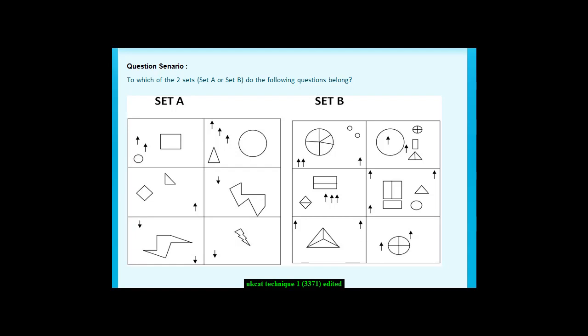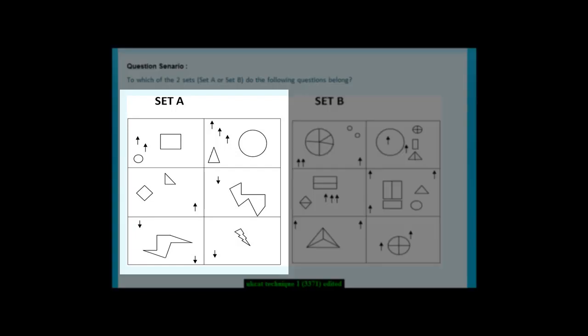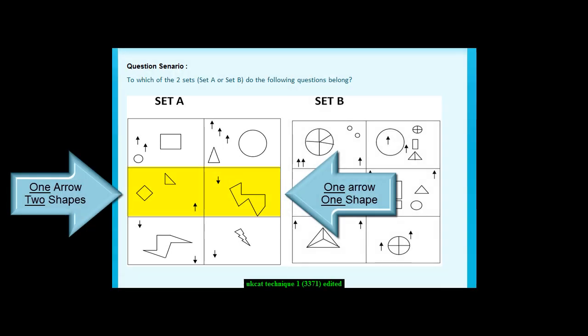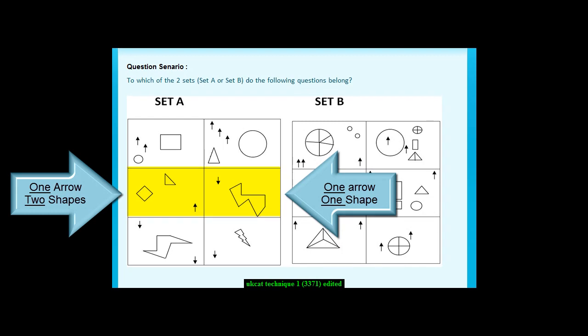Set A. At first glance you notice arrows and shapes. You would first look for a relationship between the number of arrows and the number of shapes. There is no relationship.